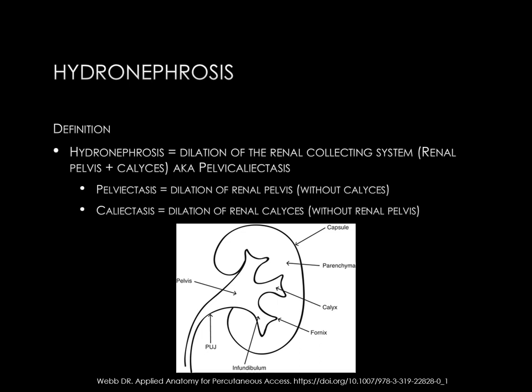Here's a diagram of the renal pelvis. The renal pelvis connects to multiple renal calyces in the upper, mid, and lower portion of the kidney. The connection of the renal pelvis to the calyces is known as the infundibulum. The corners of the calyces are the renal fornix, and the central impression of the calyces is the renal papilla or papillary impression. The PUJ in this diagram is the pelvis-ureter junction, often called UPJ or ureteropelvic junction.